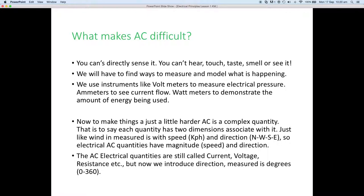So, electrical AC quantities have magnitude, for example, wind with its speed, but our magnitudes tend to be voltages and currents and things, but we also have direction associated with those quantities.